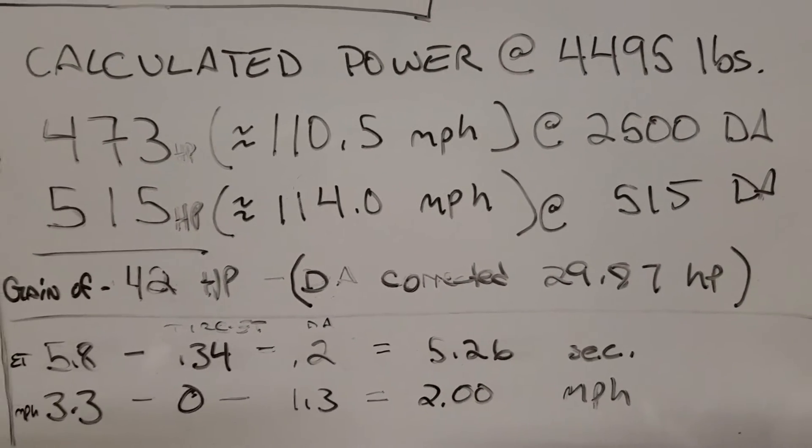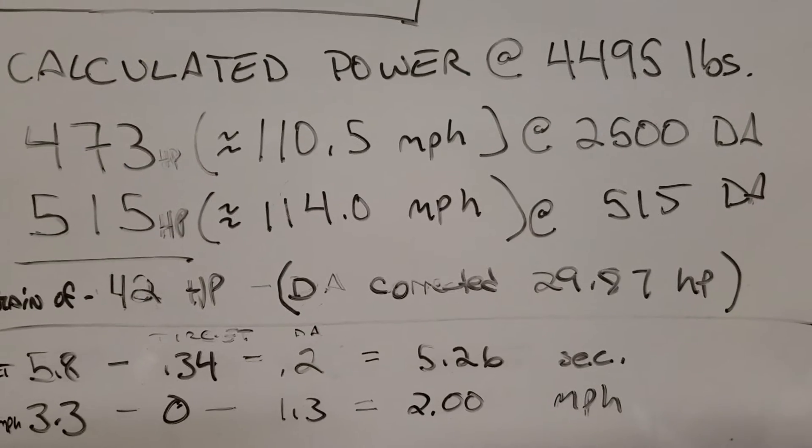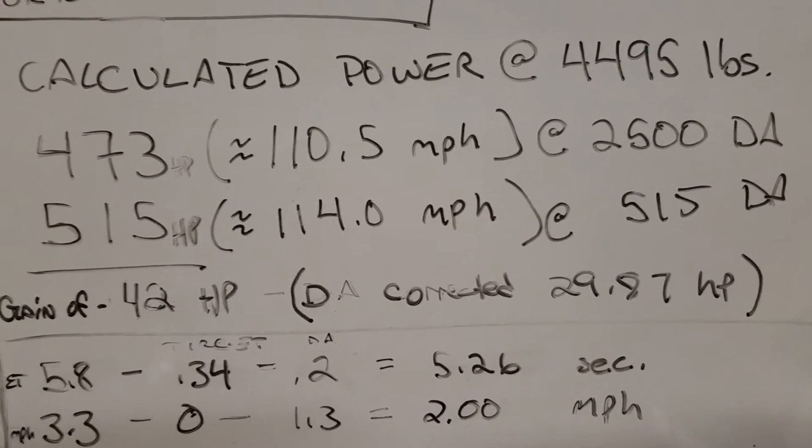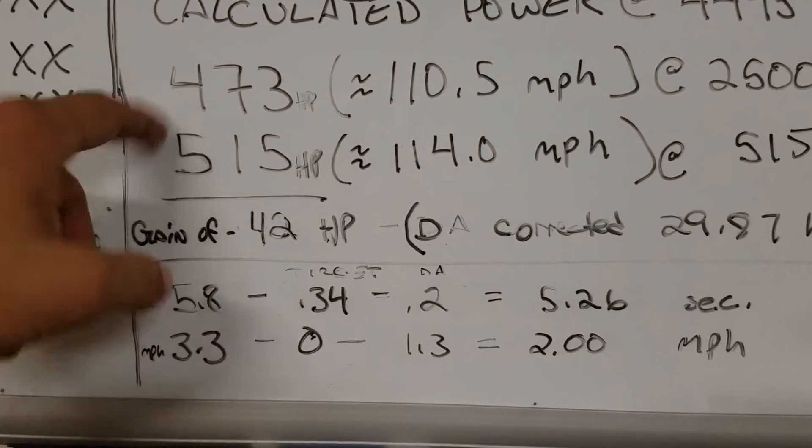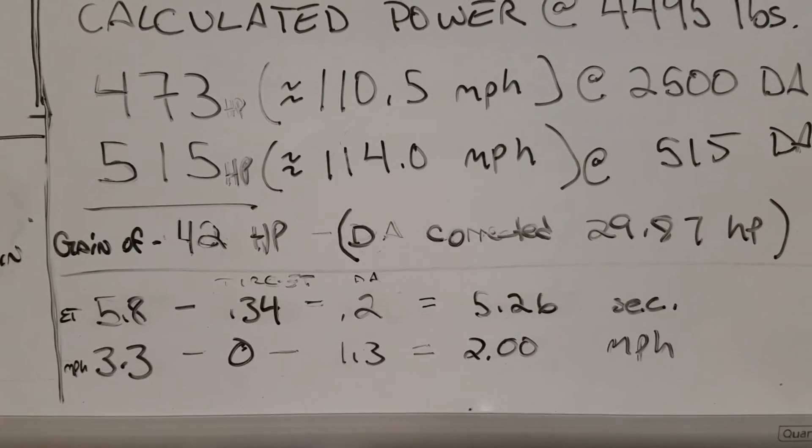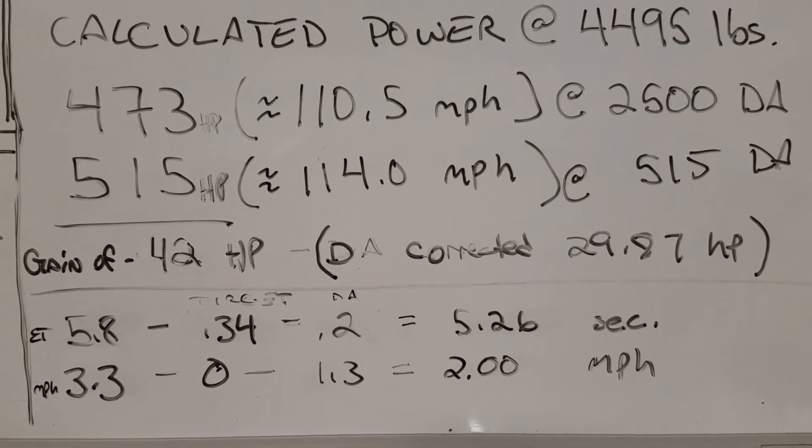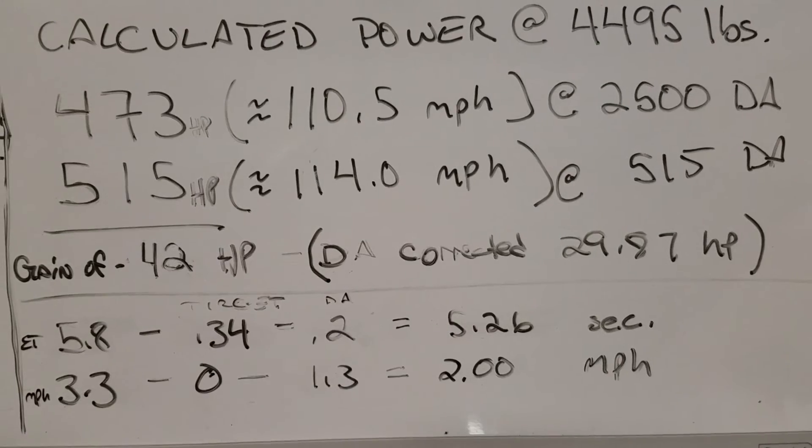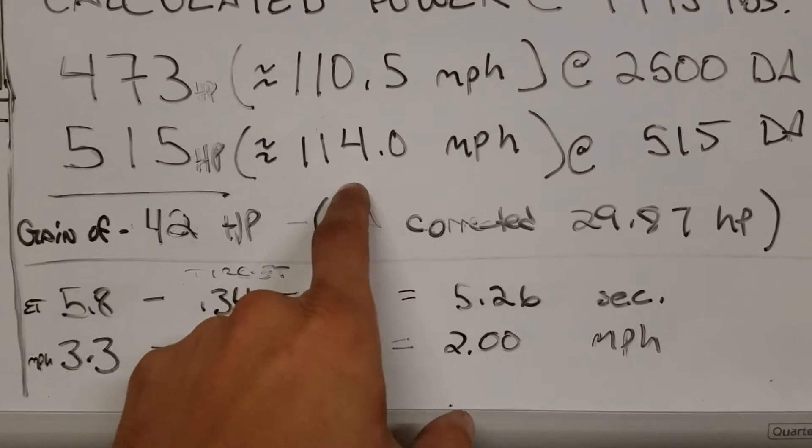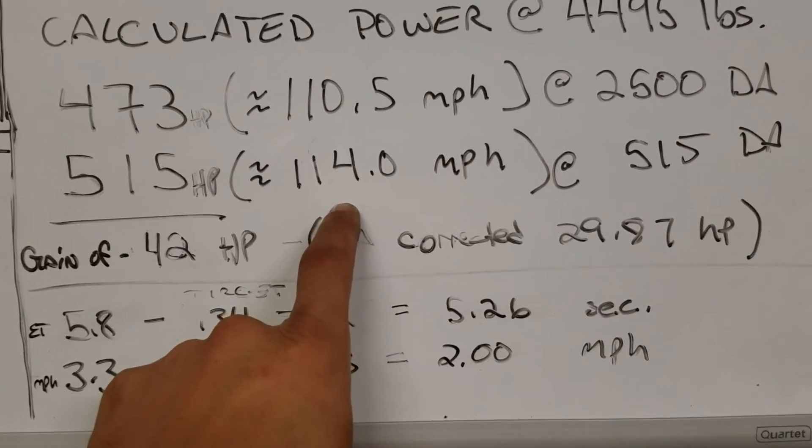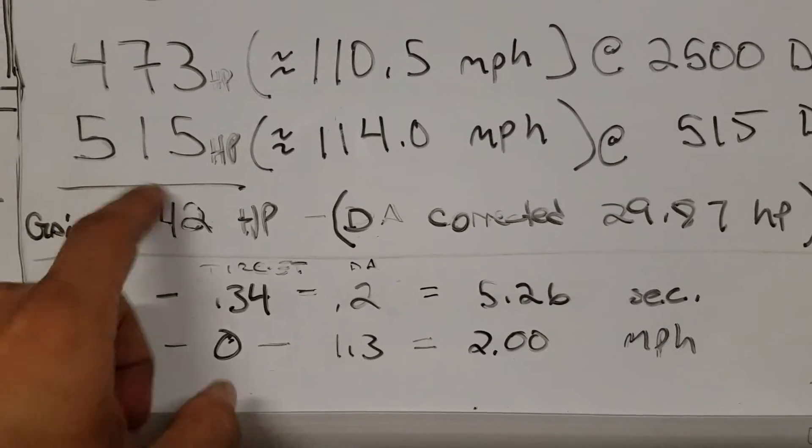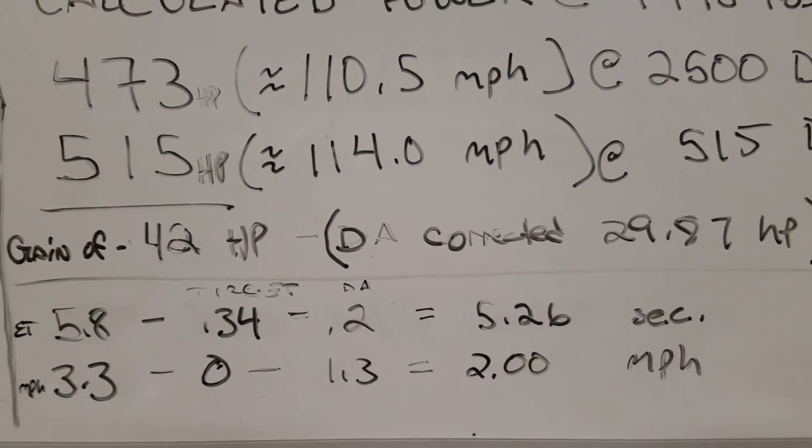At an average 110 and a half miles an hour, which is what it was doing before the stock tune and the stock tire. It was doing that at around a 2,500 foot DA, which is going to give you right at about 473 horsepower at the crank. And with the tune and the, well, just the tune by itself really, and also taking the tire into account a bit as well. Average in about 114 miles an hour all night at about a 500 or so DA, it's going to equate to about a 515 horsepower number at the crank.